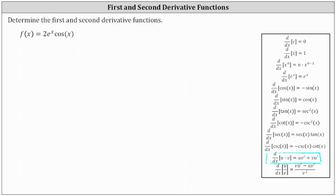So in our case, let's let u equal two e to the x and v equal cosine x. Now we can find the first derivative, and then once we find the first derivative, we'll differentiate it to determine the second derivative.